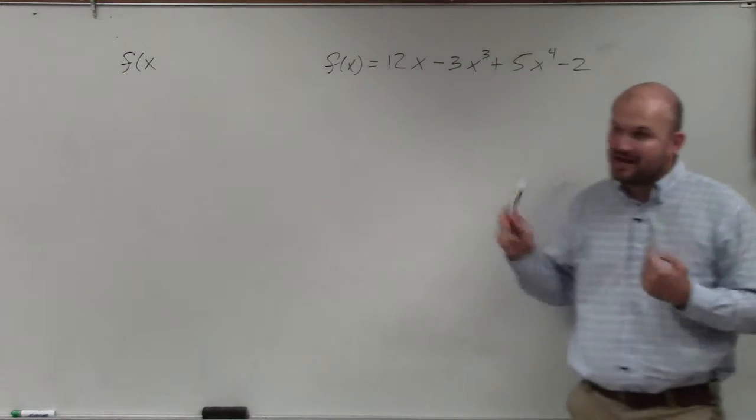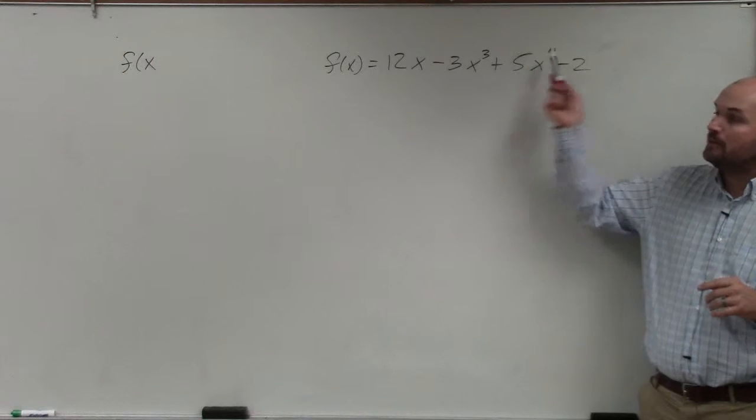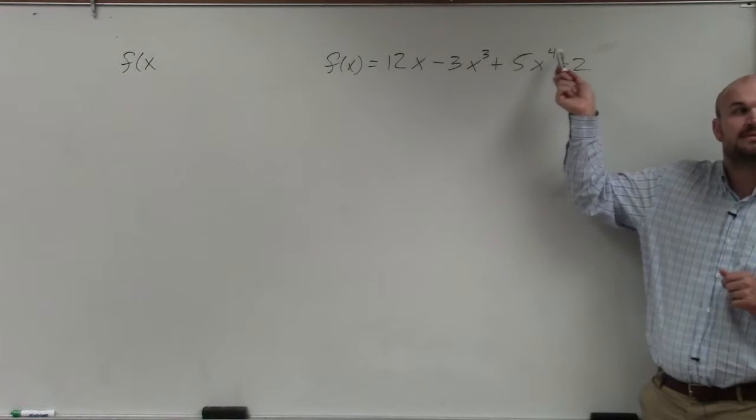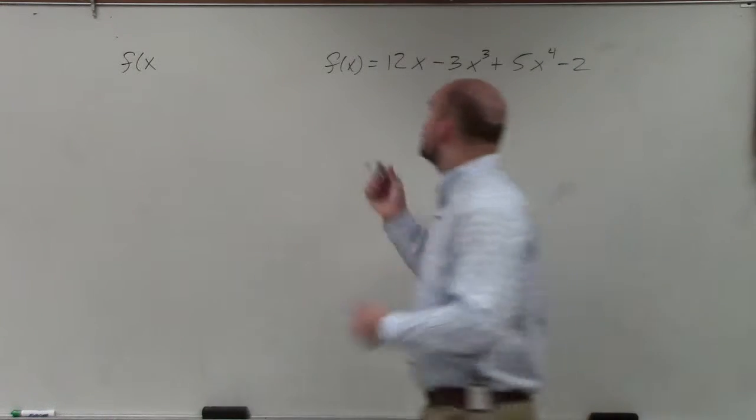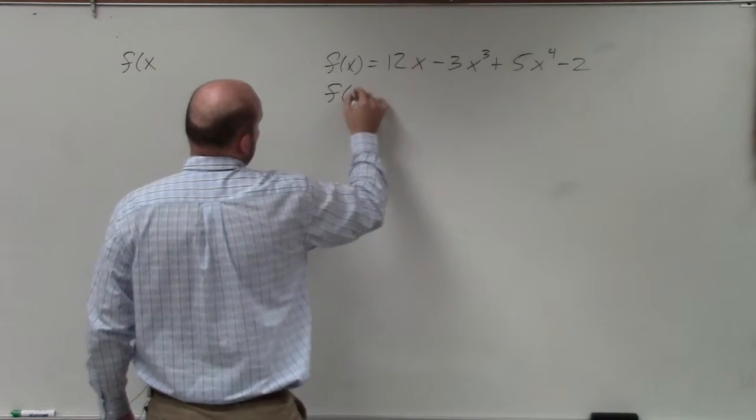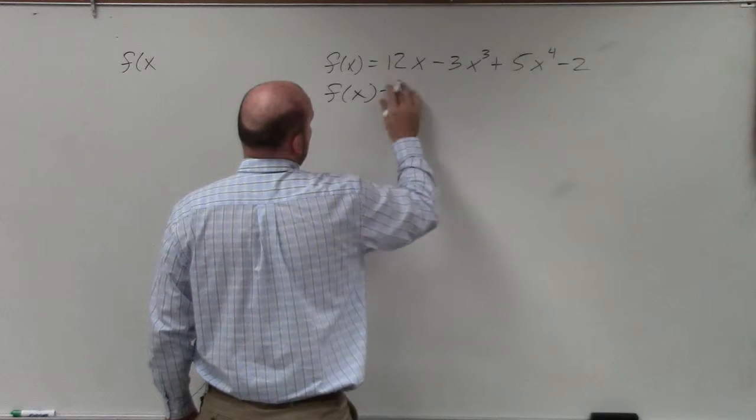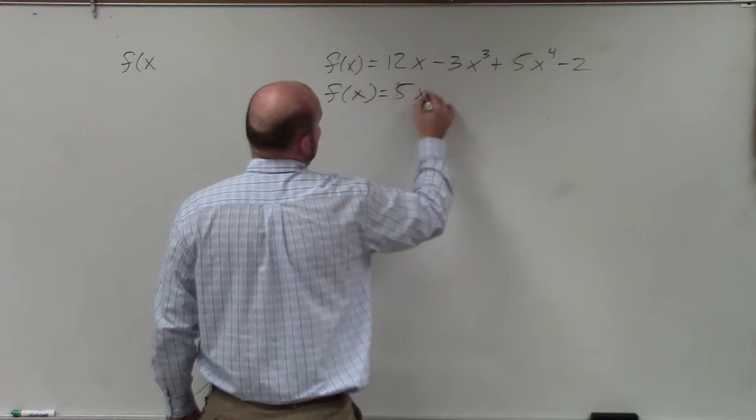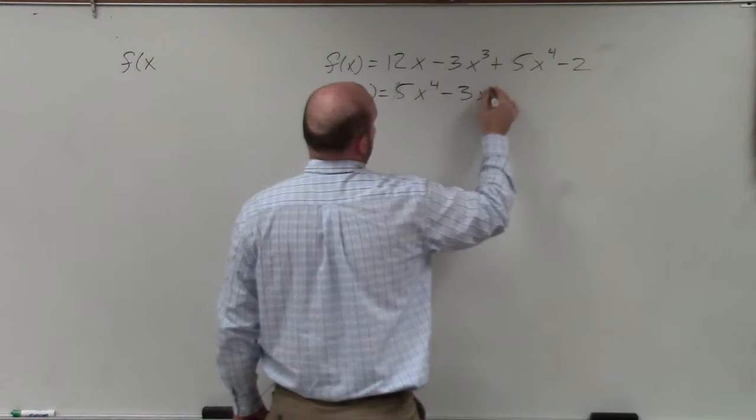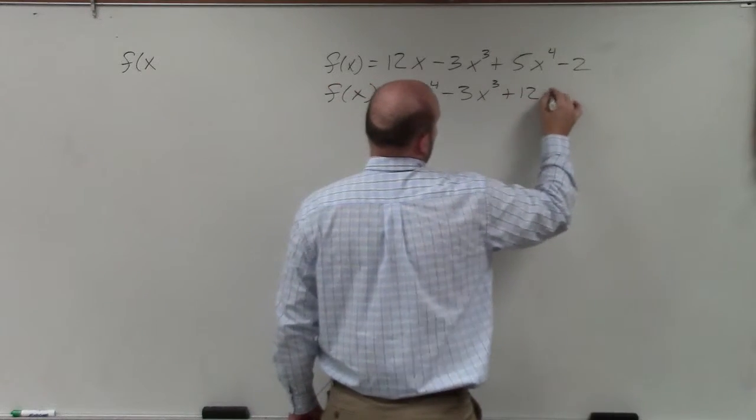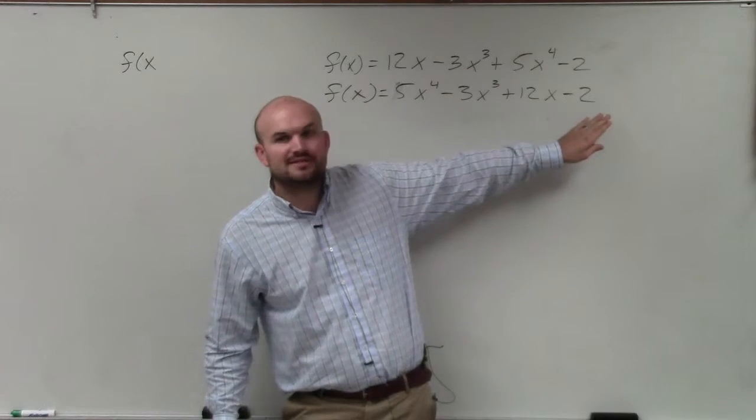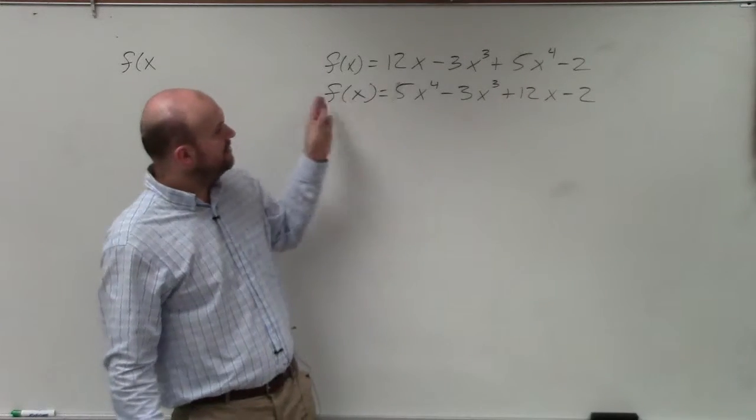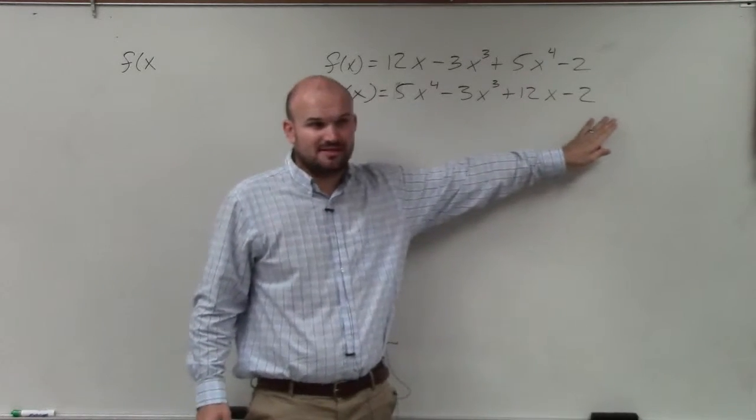To do that though, you have to have your powers in descending order. You can see here, 4 is my highest power, right? Not coefficients in descending order, power descending order. So I'm going to rewrite this to say I have 5x to the fourth minus 3x cubed plus 12x minus 2. Your constant is always going to be last because that's basically like x to the 0. Do you guys agree with me? That's in descending order.